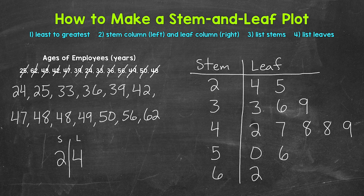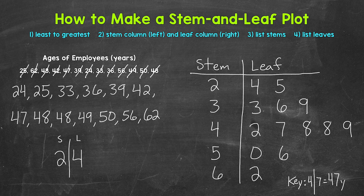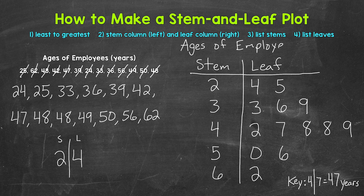Now what we can do is make a key, so that anyone looking at this will know exactly what the stems represent and what the leaves represent. All we need to do is take an example from the table and put what it equals. So we can put "Key" below the table. Let's use 47 — a stem of 4 and a leaf of 7 equals 47 years. And then lastly, I'm going to put a title up top: "Ages of Employees" in years.